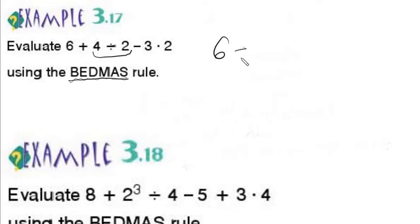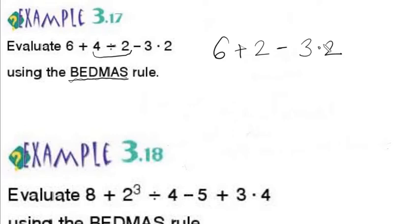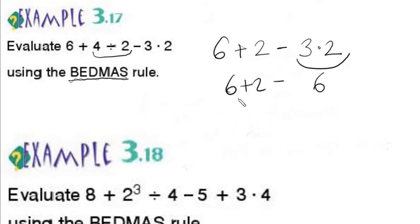So we have 6 plus what is 4 over 2, which is 2, minus 3 times 2. We have addition, subtraction, and multiplication here, so multiplication takes priority. First we do that: 6 plus 2 minus 6.